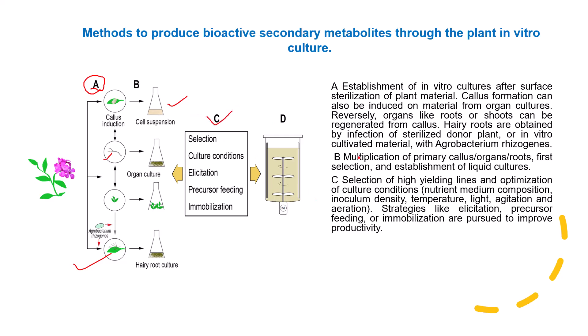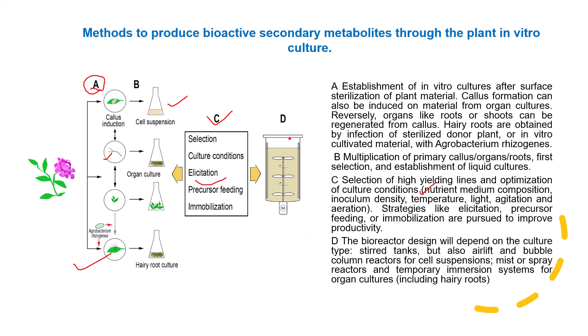Step C involves selection of high-yielding lines and optimization of cultural conditions by evaluating nutrient media composition, inoculum density, temperature, light, agitation, and aeration. Strategies like elicitation, precursor feeding, and immobilization are used to improve productivity. Finally, bioreactor design depends on the culture type — stirred tank, airlift, or bubble column reactors for cell suspension; mist or spray reactors and temporary immersion systems for organ cultures.